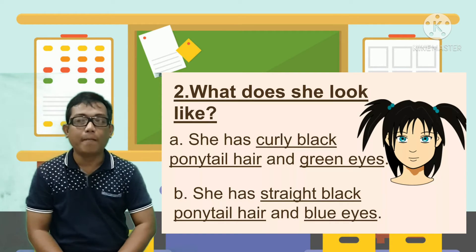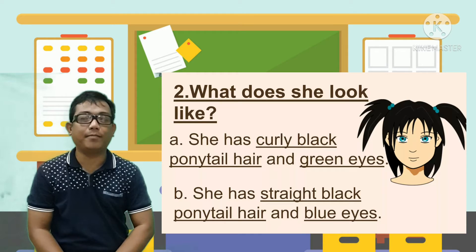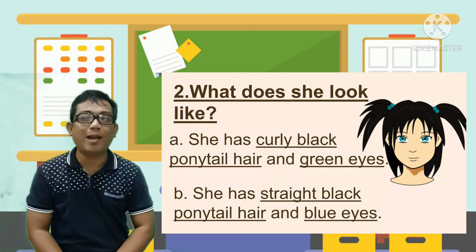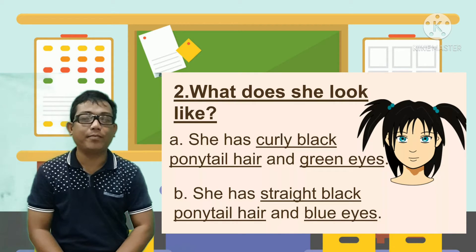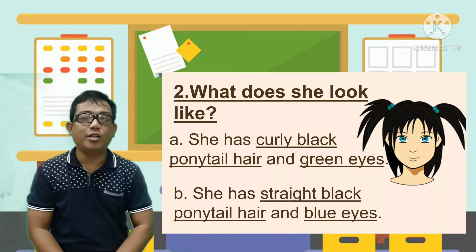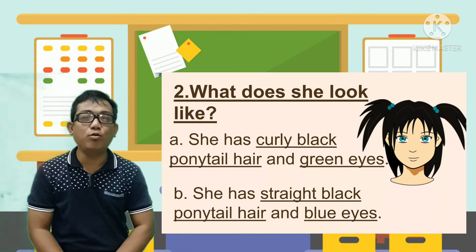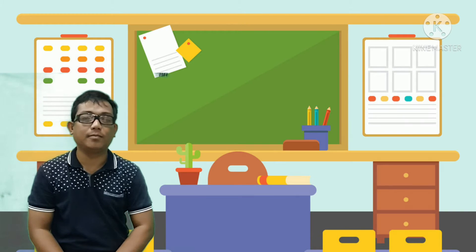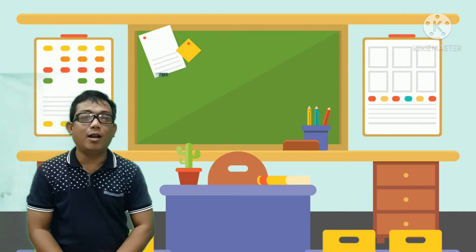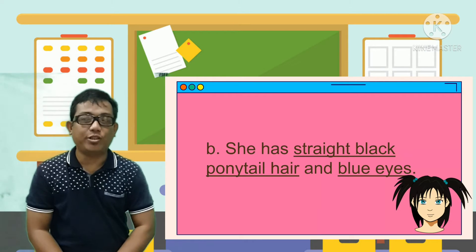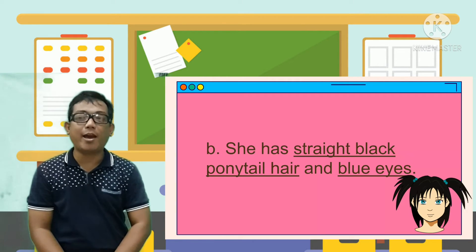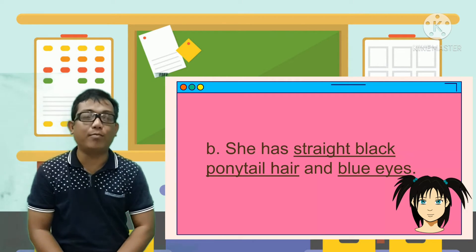Number 2. What does she look like? A. She has curly black ponytail hair and green eyes. B. She has straight black ponytail hair and blue eyes. The correct answer is Letter B. She has straight black ponytail hair and blue eyes.